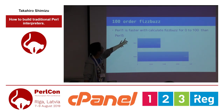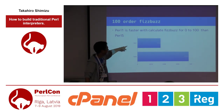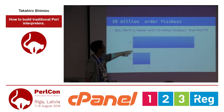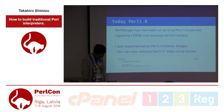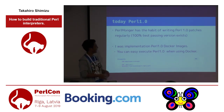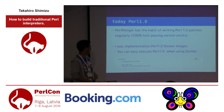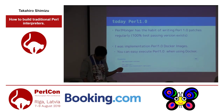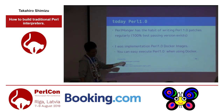Perl 1 future processing time with benchmark. Perl 1 is slower than Perl 5. With ten million iterations, Perl 5 finishes first. You can see Perl 1.0 is indeed slower. I was implementing Perl 1.0 Docker images so you can easily execute Perl 1.0 when you use Docker.